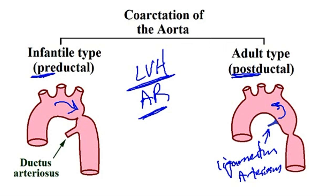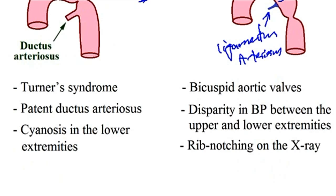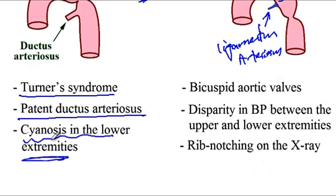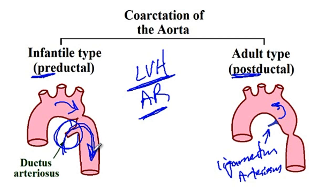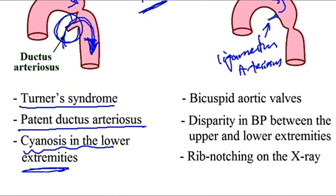There are other characteristics seen with the infantile or adult type. With the infantile type, which is usually associated with Turner syndrome and has patent ductus arteriosus, there would be cyanosis in the lower extremities. Patients with Turner syndrome have the infantile type of coarctation of the aorta. Because there is shunting of deoxygenated blood from the right ventricle into the descending aorta, deoxygenated blood goes to the lower extremities, causing cyanosis there.